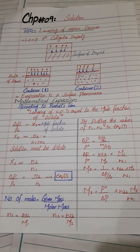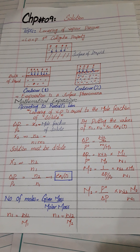In the previous lecture on colligative properties, I told you that when you add solute to a solvent, the vapor pressure will decrease. Adding solute to a solvent causes a decrease in vapor pressure.